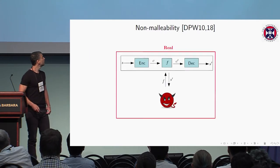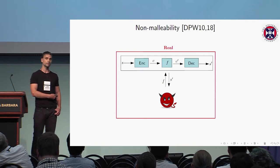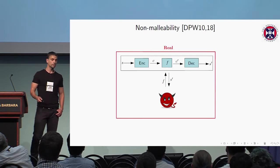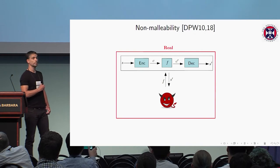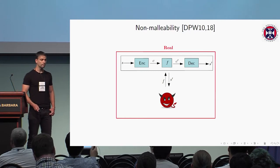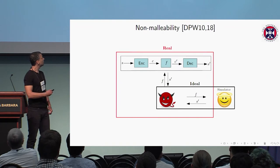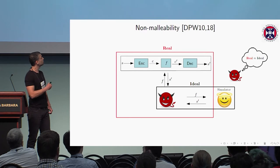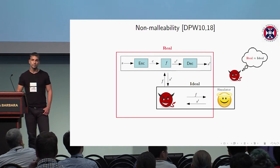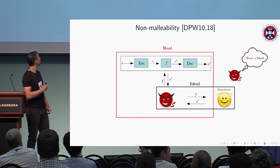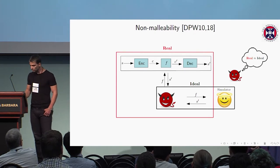More formally, this is the real world execution in which the adversary interacts with the codeword over the private message S. Non-malleability means that for any such adversary, we have a simulator. The simulator interacts with the adversary without having access to S, and is able to produce a view which is indistinguishable from the real execution. Since the simulator does not have access to S, this gives privacy over the message.